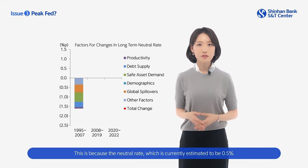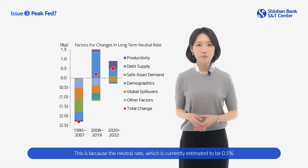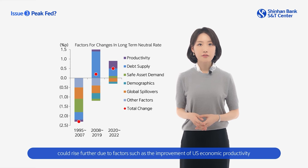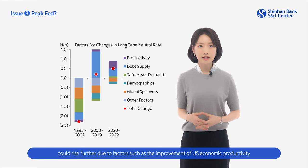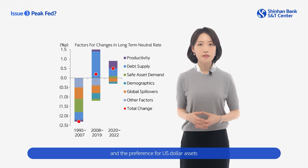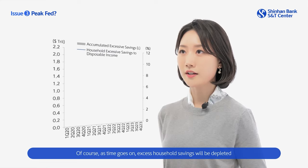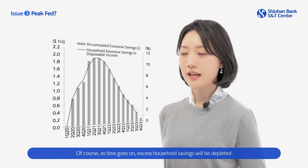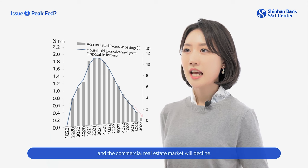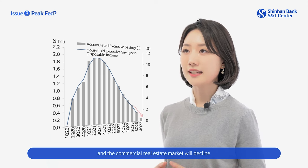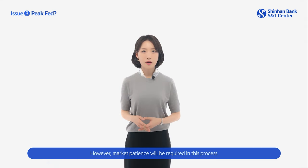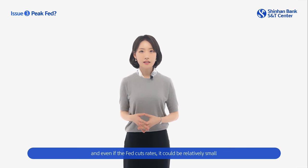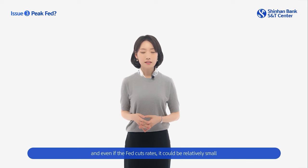This is because the neutral rate, currently estimated at 0.5%, could rise further due to factors such as the improvement of U.S. economic productivity and the preference for U.S. dollar assets. As time goes on, excess household savings will be depleted and the commercial real estate market will decline, leading to rate cuts in the second half of the year. However, market patience will be required in the process, and even if the Fed cuts rates, it could be relatively small.